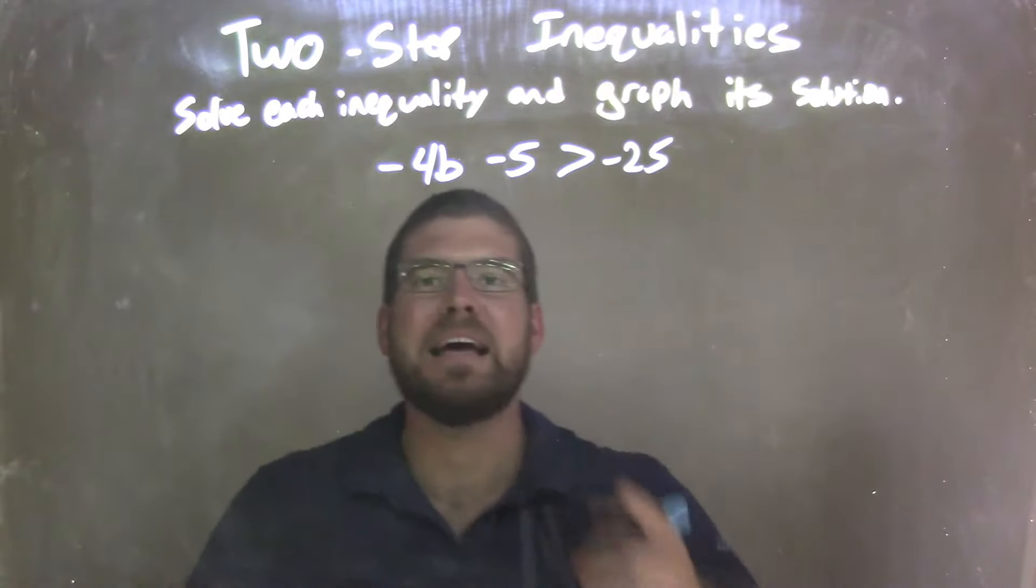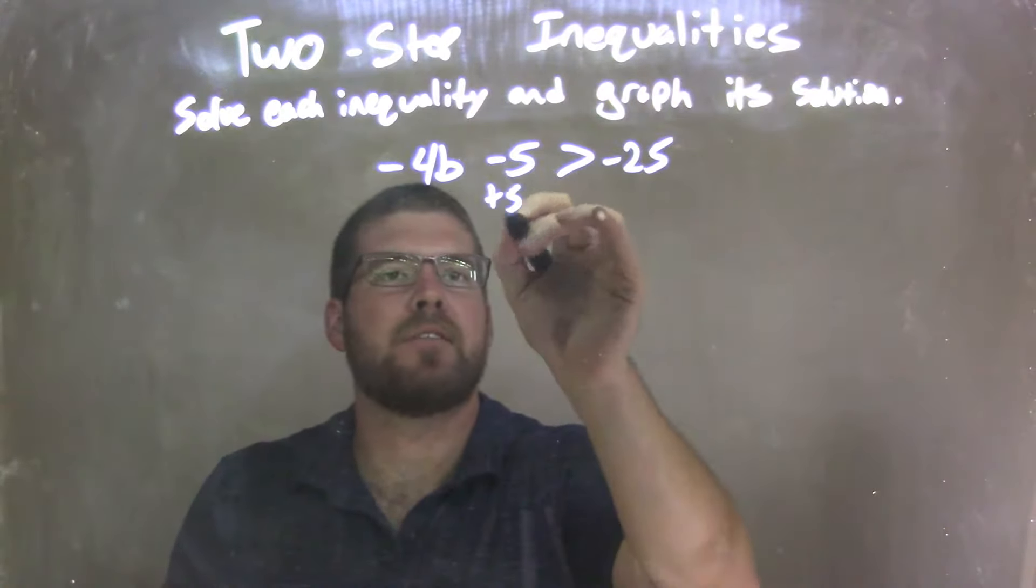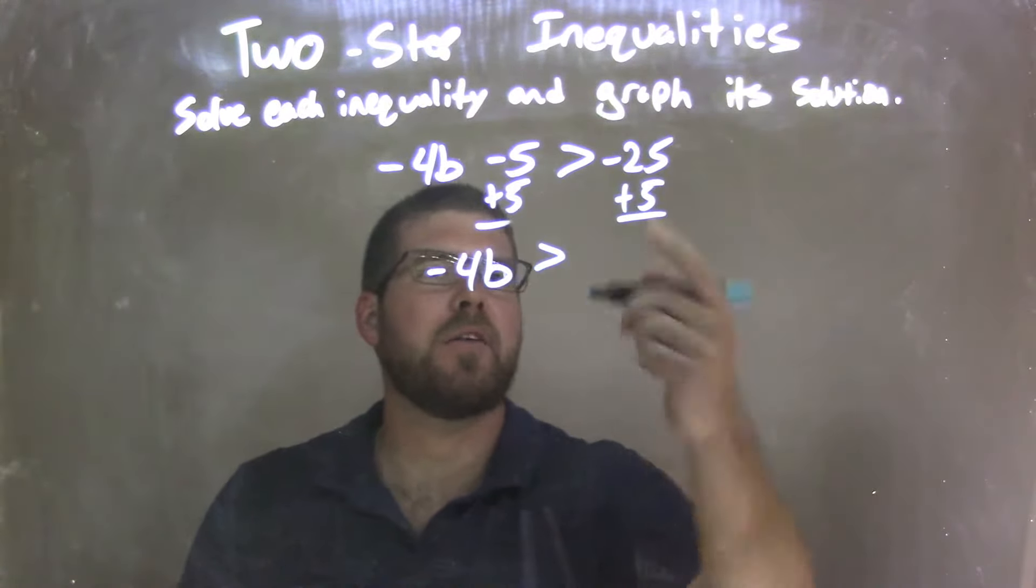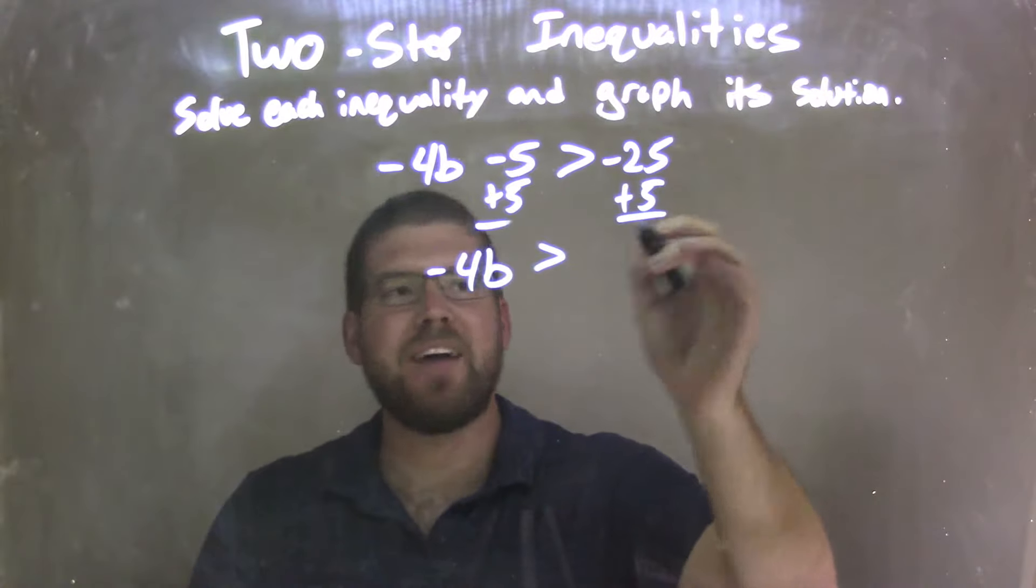Well, my first step here is I need to add 5 to both sides. So by adding 5 to both sides, I'm left with negative 4b on the left is greater than negative 25 plus 5 is negative 20 on the right.